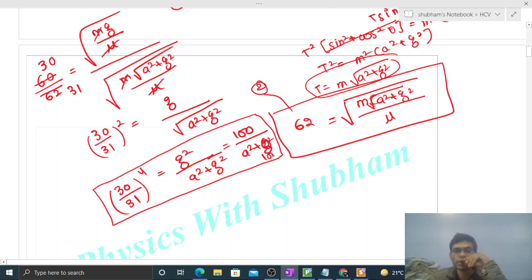Now see, a simple equation remains. From here you have to find out the value of a. Means g square you have to take as 100, so in this way variable a remains. You can easily find out the value of a.